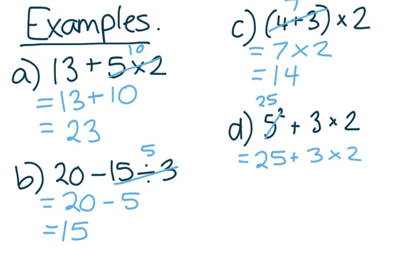Now we have our first line of working done and then we can decide, it's just like example A, where we do the multiplication first. So 3 times 2 is 6. So we would have 25 plus 6 which would give us 31 as our answer.